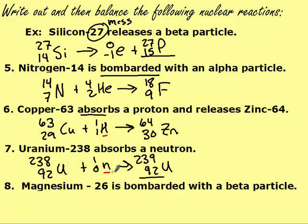A lot of times on the test, this is the section people do very poorly on because they don't realize what absorb or release mean, and they forget the symbols and numbers that go along with each of those particles. So magnesium-26 is bombarded with a beta, so it should be on the same side. And 12 minus 1 is 11.